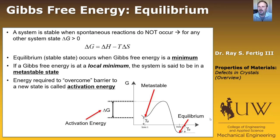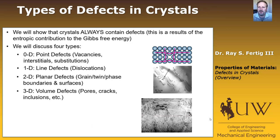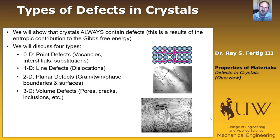That's a high-level overview of the thermodynamics we're going to use. The key things I want you to know are the ideas of equilibrium, activation energy, and metastable states. To achieve equilibrium, we balance increasing entropy and decreasing enthalpy. As for the types of defects we'll discuss, first we'll show that every crystal always contains defects as a result of the entropic contribution to Gibbs free energy. We'll discuss four types: zero-D point defects, such as vacancies, interstitials, and substitutions.